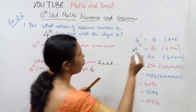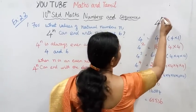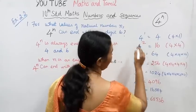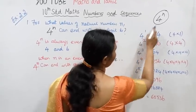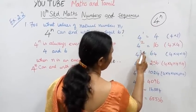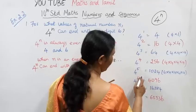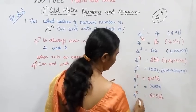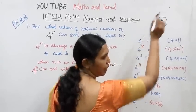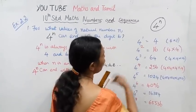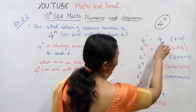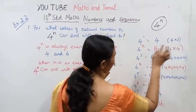We have 4 power n. N will be 1, 2, 3, 4, 5, 6, 7, and so on. For n=1: 4 power 1 is 4. For n=2: 4 into 4 is 4 squared.